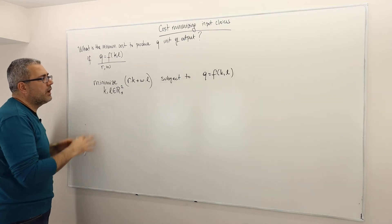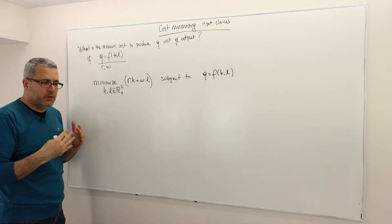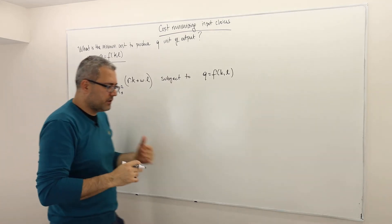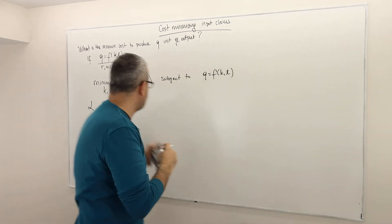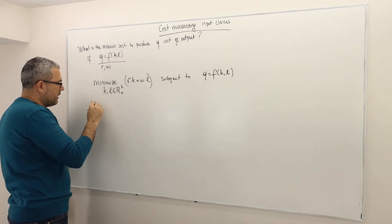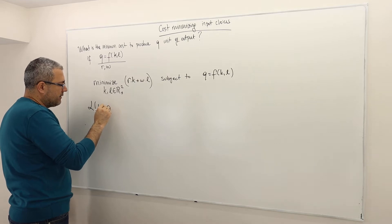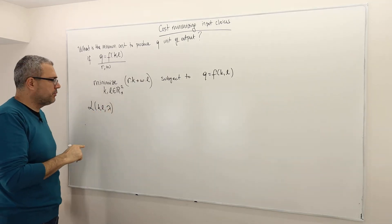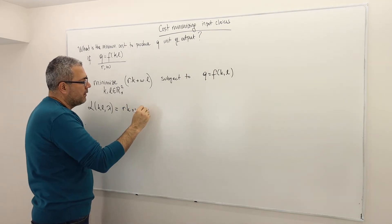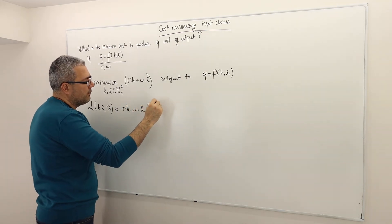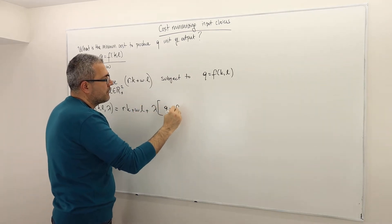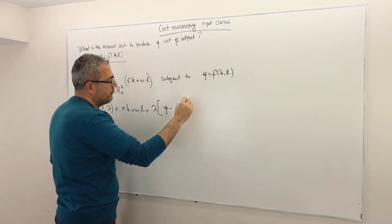So how do we solve this optimization problem? Simple — use the Lagrangian method. The Lagrangian function, which is a function of the choice variables K, L and the Lagrange multiplier lambda, is equal to RK plus WL plus lambda times the quantity Q minus F of KL.